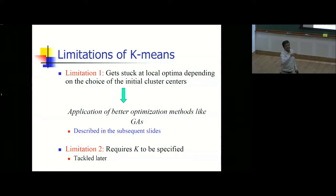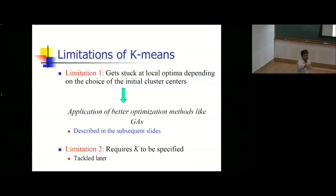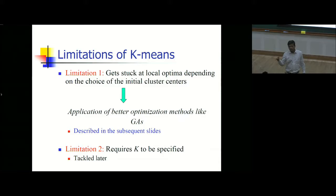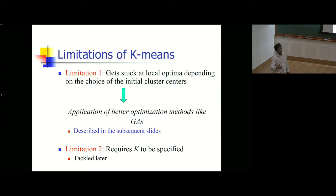K-Means has two main problems. First, it is a greedy method — always moving to the best local improvement — which means it can get trapped in local optima. To check whether an optimization problem is convex, you compute the Hessian (matrix of second partial derivatives). If the Hessian is positive semi-definite (all elements ≥ 0), the problem is convex and has a unique global optimum. Unfortunately, most real-life problems are not convex.